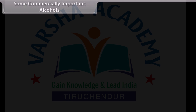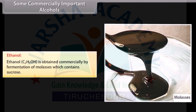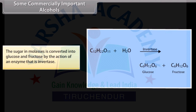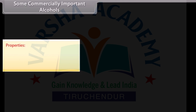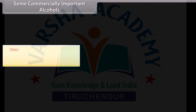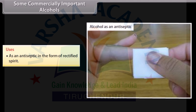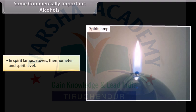Ethanol is obtained commercially by fermentation of molasses, which contains sucrose. The sugar in molasses is converted into glucose and fructose by the action of the enzyme invertase. The produced glucose and fructose then undergo fermentation in the presence of the enzyme zymase to produce ethanol and release carbon dioxide. Properties: ethanol is a colorless, volatile liquid with a pleasing smell and burning taste, miscible with water in all proportions. Uses: as an antiseptic in the form of rectified spirit; as an antifreeze in automobile radiators; and in spirit lamps, stoves, thermometers, and spirit levels.